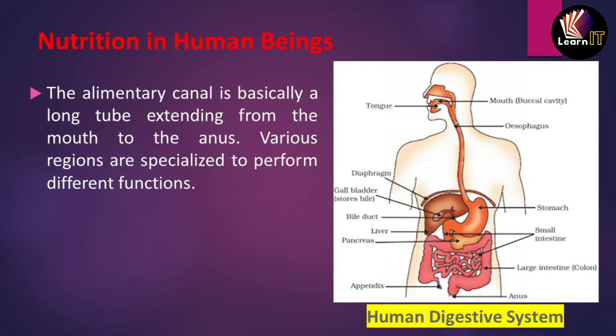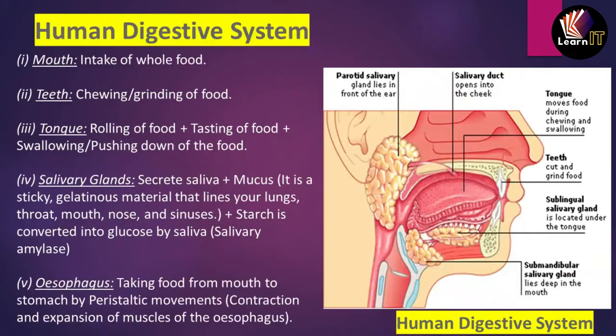The fourth part is the stomach, where gastric juices including HCl mix with the food and send it to the small intestine. The small intestine does the major portion of absorption and digestion. Then the food moves to the large intestine, then to the rectum where waste is stored, and finally it is expelled through the anus.